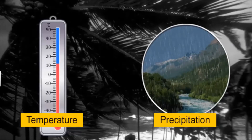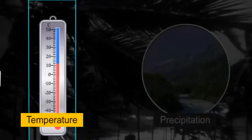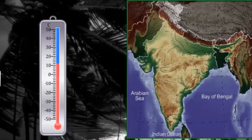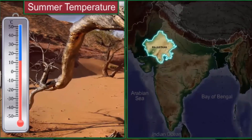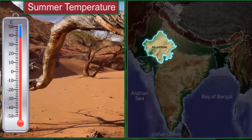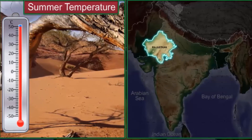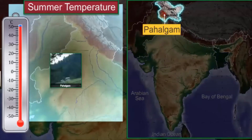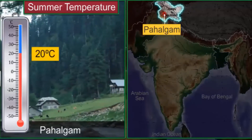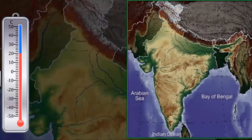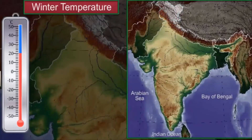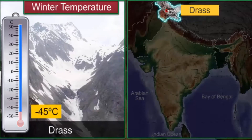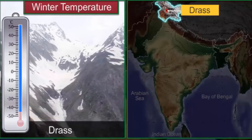Let us look at the variation in temperature experienced in different regions in India. In some parts of the Rajasthan desert, the temperature in summers occasionally touches 50 degrees Celsius. Whereas summer temperature in Pahalgam in Jammu and Kashmir may be around 20 degrees Celsius. During winters, the temperature in Dhras in Jammu and Kashmir may fall as low as minus 45 degrees Celsius. Dhras has become famous as the second coldest inhabited place in the world.